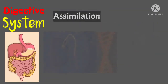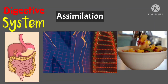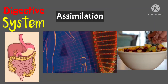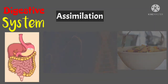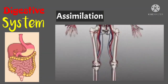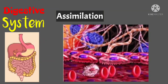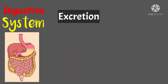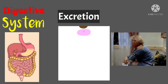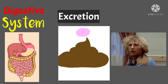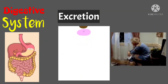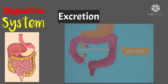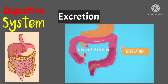The next process is assimilation. The chemicals from food are then taken into the cells of the body after digestion and absorption. The food is absorbed by blood and transported to various parts of the body by the blood vessels. The last process is excretion or defecation. The undigested food must be expelled or eliminated from the body as waste materials. In the large intestine, waste products from the digestive process are removed.